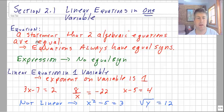As a matter of definition, an equation is simply a statement that two algebraic equations are equal. So it may sound obvious, but equations will always have equal signs, whereas an expression, an algebraic expression, there's no equal sign.